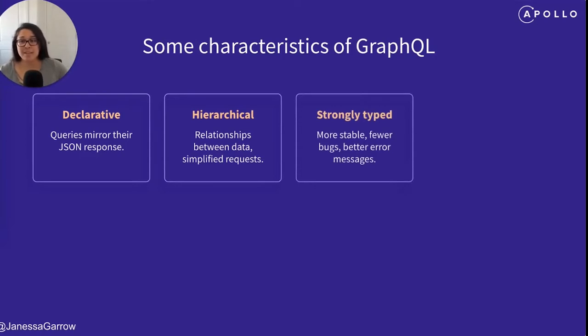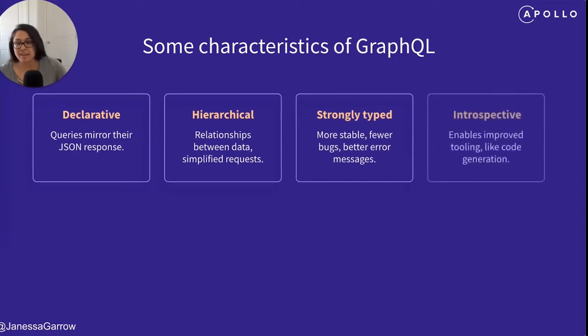GraphQL is also strongly typed. This means a more stable API, fewer bugs in development, and enables you to have more descriptive error messages.